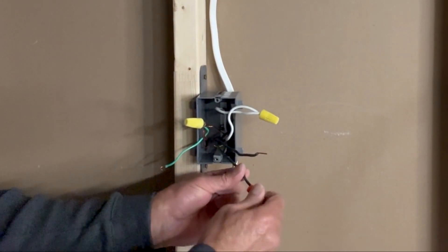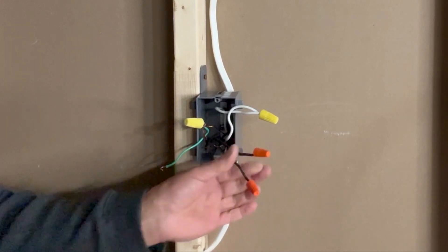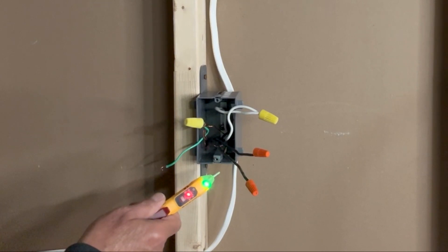So I will temporarily put wire nuts on top of these two black wires and turn on power. With power on I will check which of these two black wires is line wire and which one is the load wire.